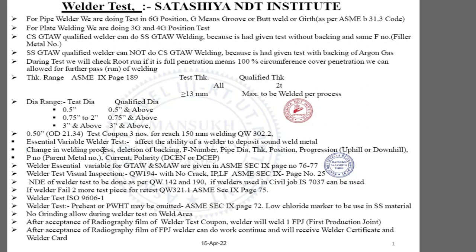The essential variables include: change in welding process (e.g., GTAW to SMAW), deletion of backing (without purging vs. with purging), F number (filler metal number — for example, carbon steel filler wire to SS filler wire), pipe diameter, and thickness range. Position is also important — a 6G position welder can weld all positions for pipe as well as plate.